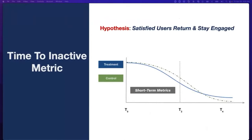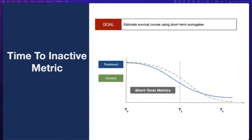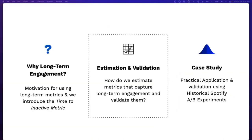Typically retention metrics work under the assumption that satisfied users return and stay engaged. Another way to view this is: how long does it take for the user to become inactive? For this, we track users' engagement levels every week and count the number of weeks until the user becomes completely inactive — that is, not a weekly active user. Of course, it could take a really long time, so we want to estimate this metric without having to wait for long periods. Our goal is to estimate the time-to-inactive metric quickly using short-term surrogates.